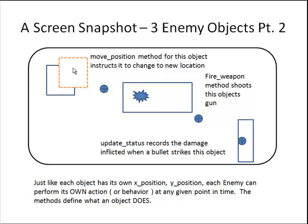The methods use the variables of the object as input and output. Let's say an enemy object can only punch. When fire weapon is called, it will look at the health status of that enemy and inflict a lot or a little damage depending on the health of the object.